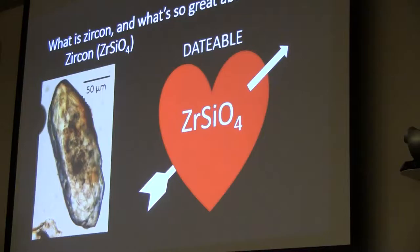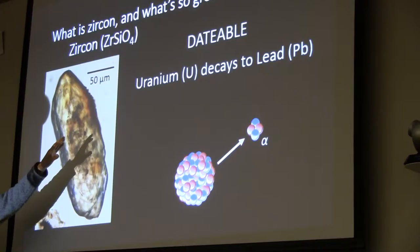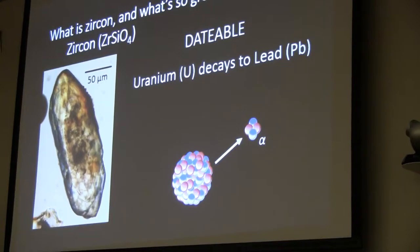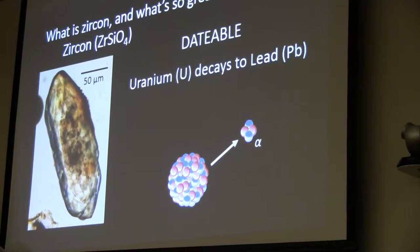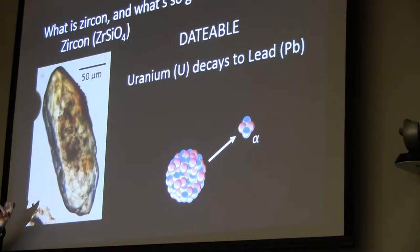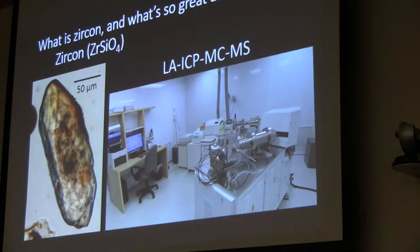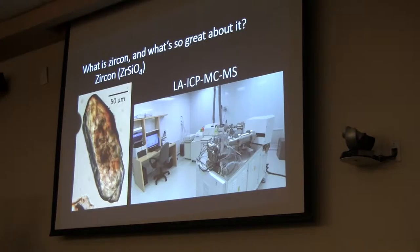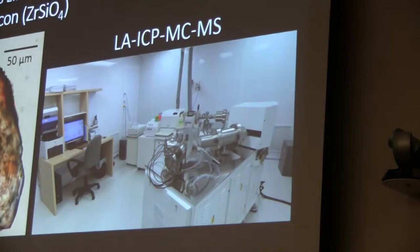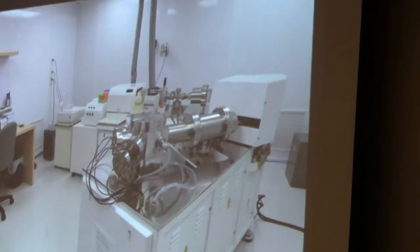We're going to be able to date zircon using the uranium-lead system. Uranium eventually decays to lead over a fairly long and complicated decay chain, but the intermediate products are very short-lived, so basically uranium decays to lead. We measure how much lead is in zircon, and we can know how old that zircon is — it's kind of like reading a clock. The clock starts essentially when the zircon crystallizes. Only we need a really fancy clock called a laser ablation inductively coupled plasma multi-collector mass spectrometer. If you've got a million bucks in your pocket, we can read the zircon clock. This is a picture of the instrument I've used for my research.